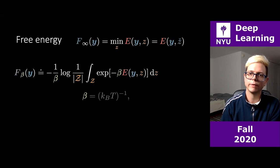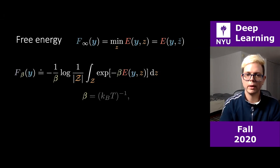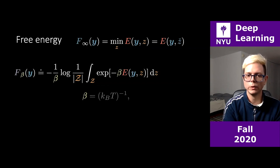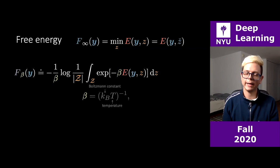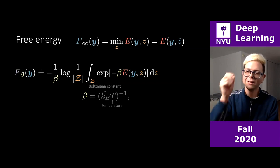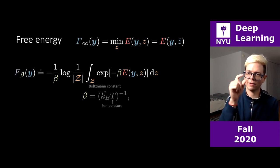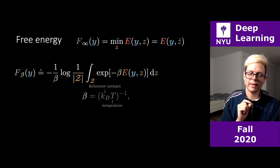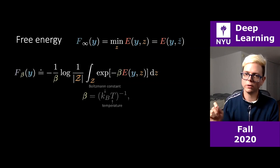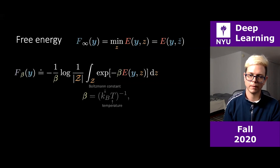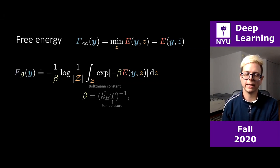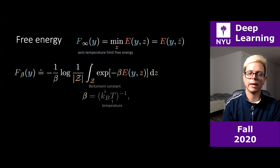I'm now introducing a relaxed version — the purple f function parameterized by beta. Beta is called the inverse temperature in physics: the thermodynamic inverse temperature or 'coldness.' It equals one over k_B times T, where k_B is the Boltzmann constant. If temperature T is very high, beta is extremely small; if T is zero kelvin, beta is plus infinity.